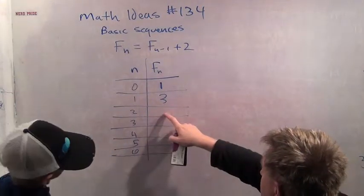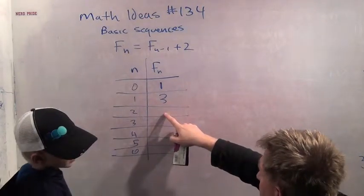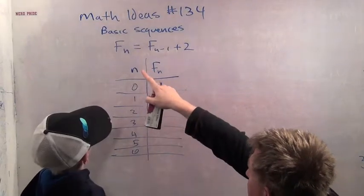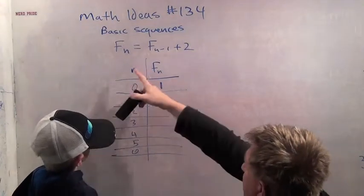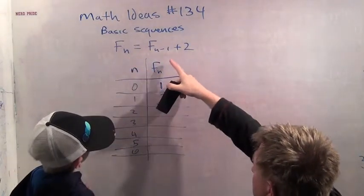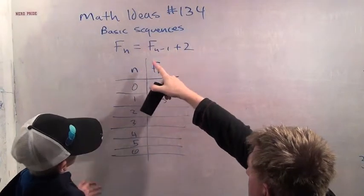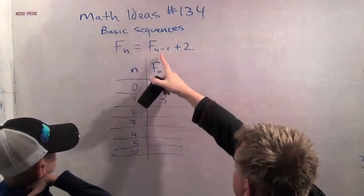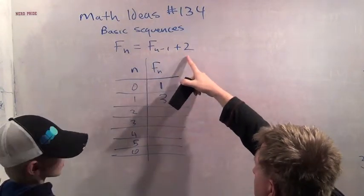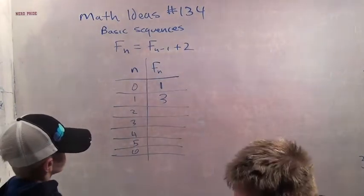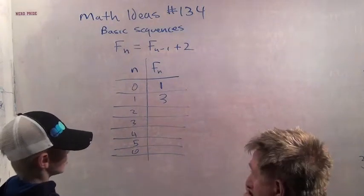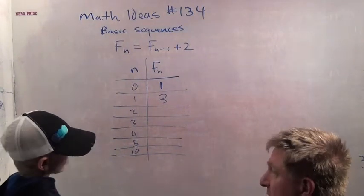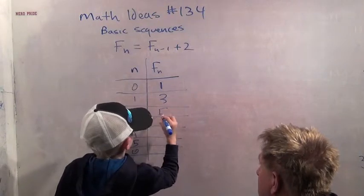Now how do we figure out what F2 is? What does our equation say F2 is? F2 equals F minus 1 plus... F2 equals F1 plus 2. So what is F1? F1 is 3. What is 3 plus 2? 5. Alright.